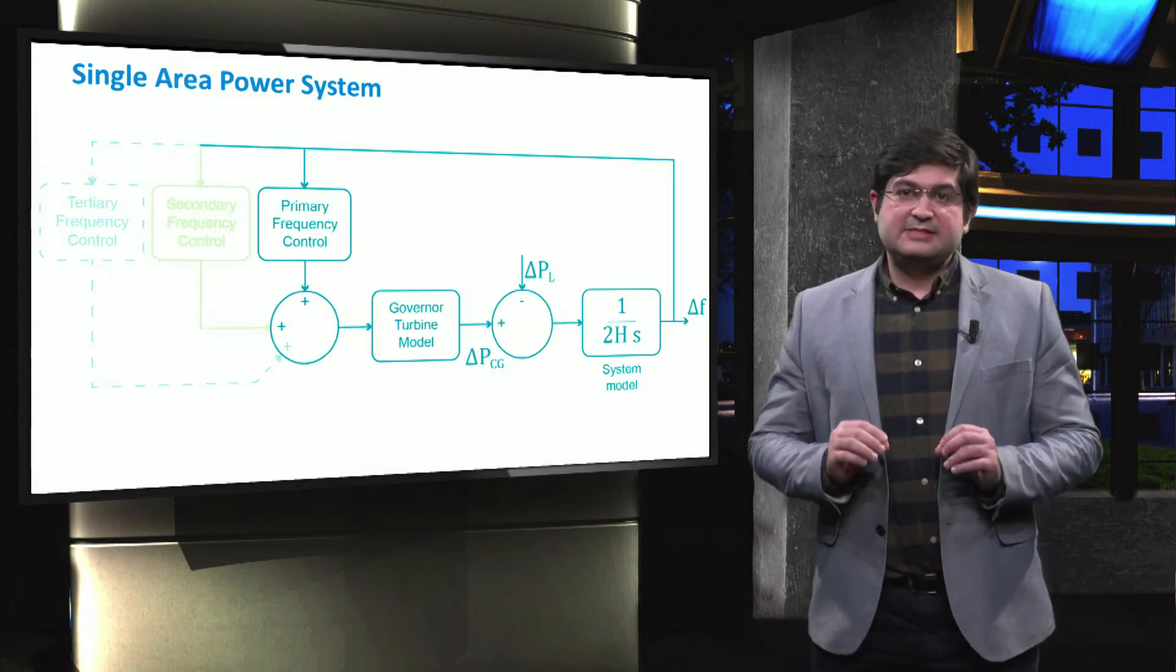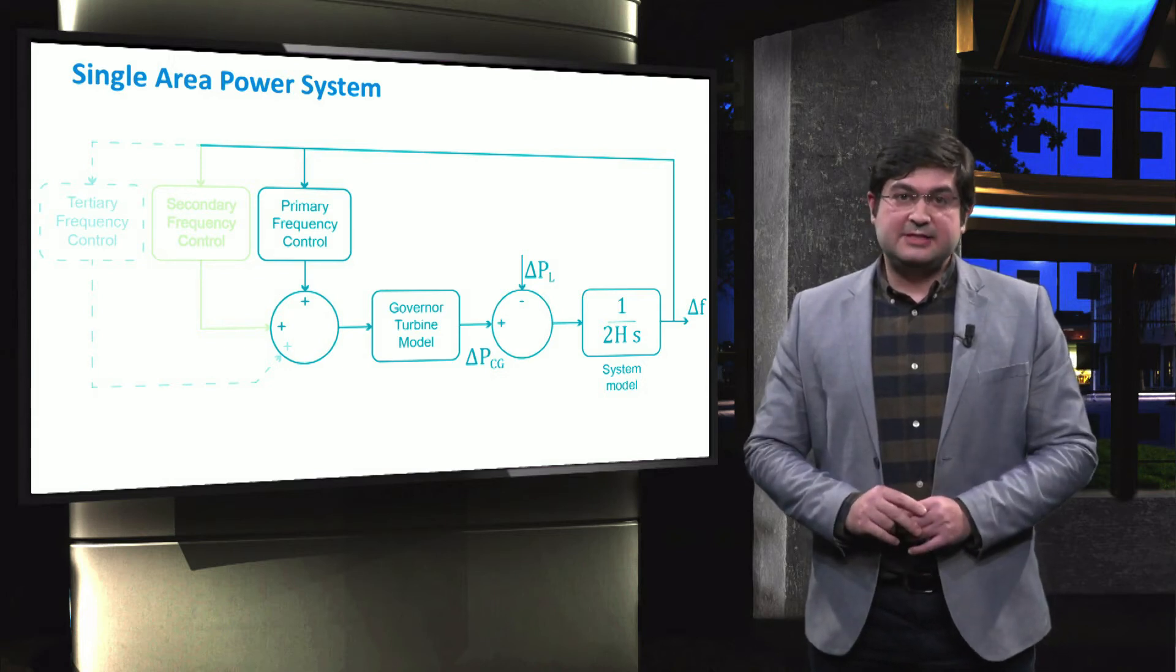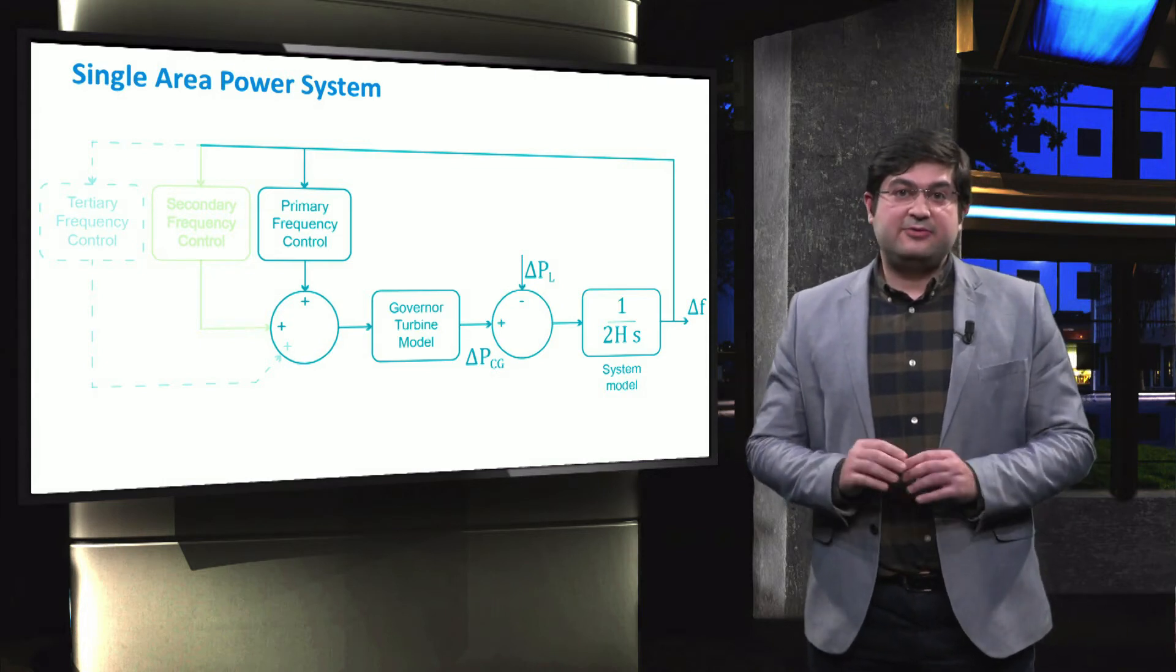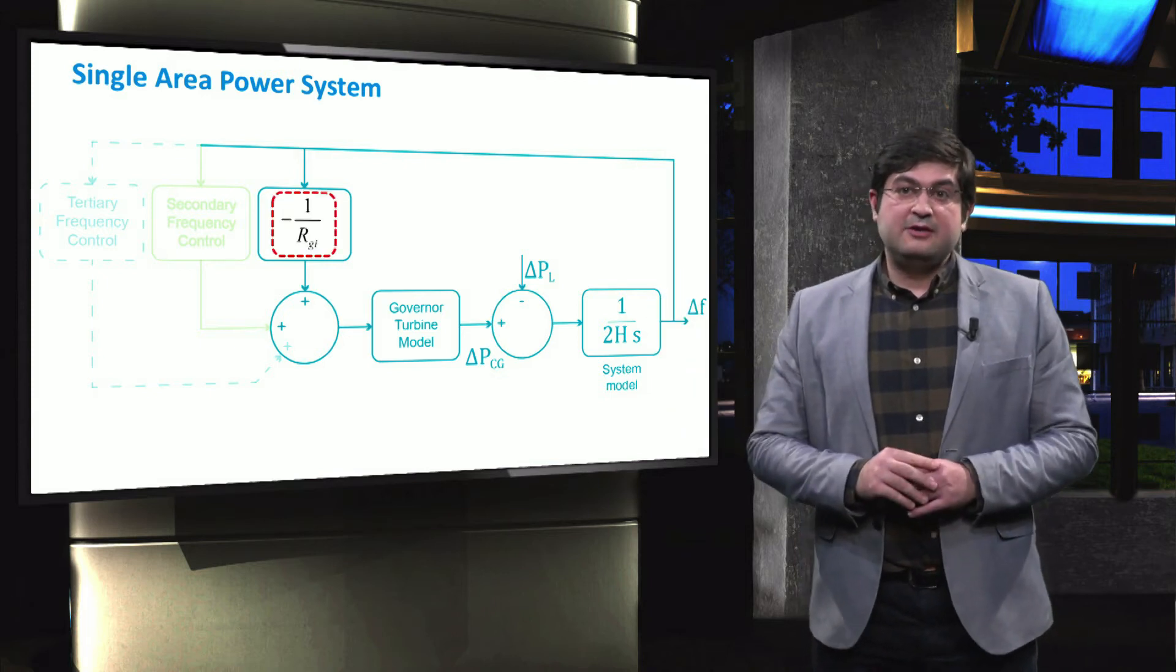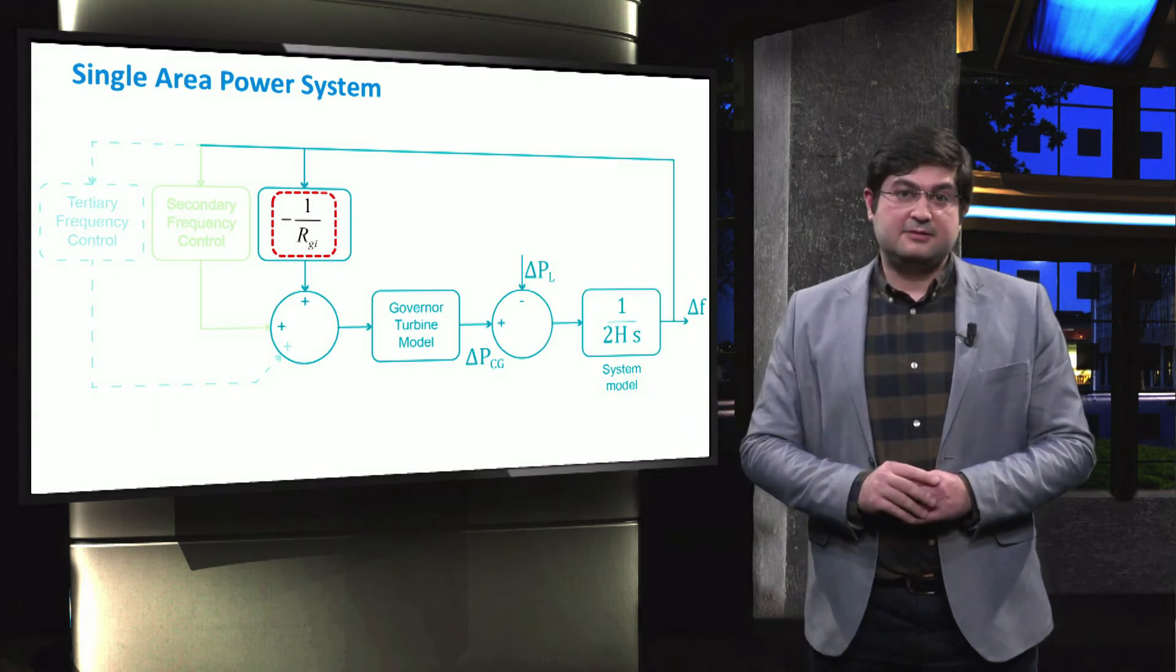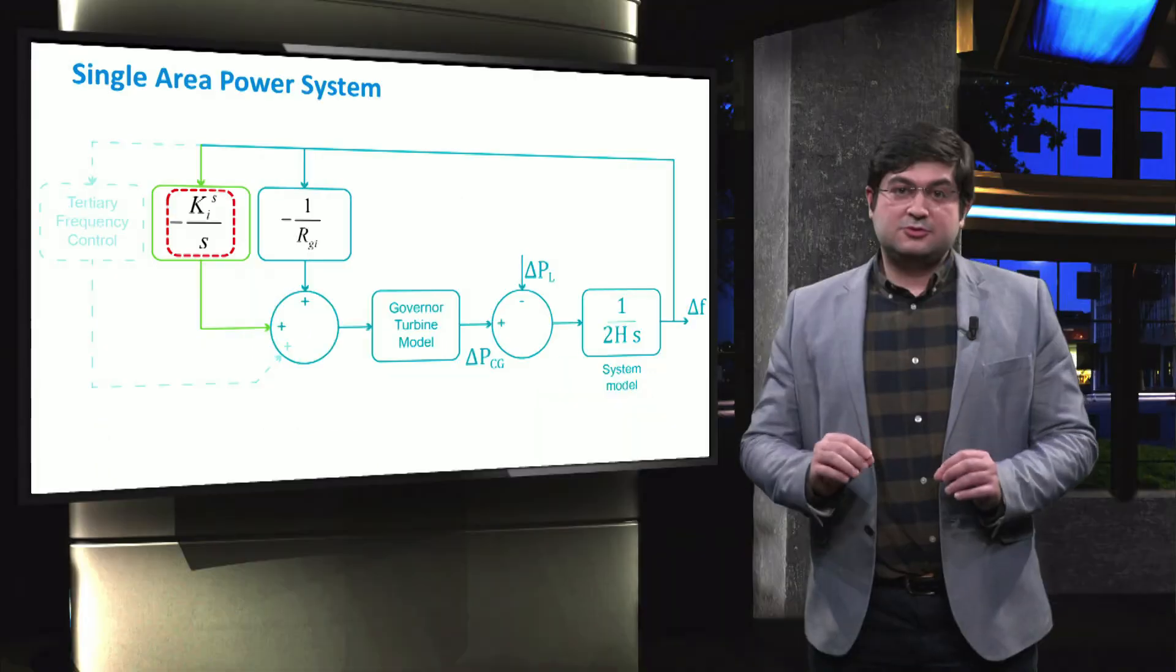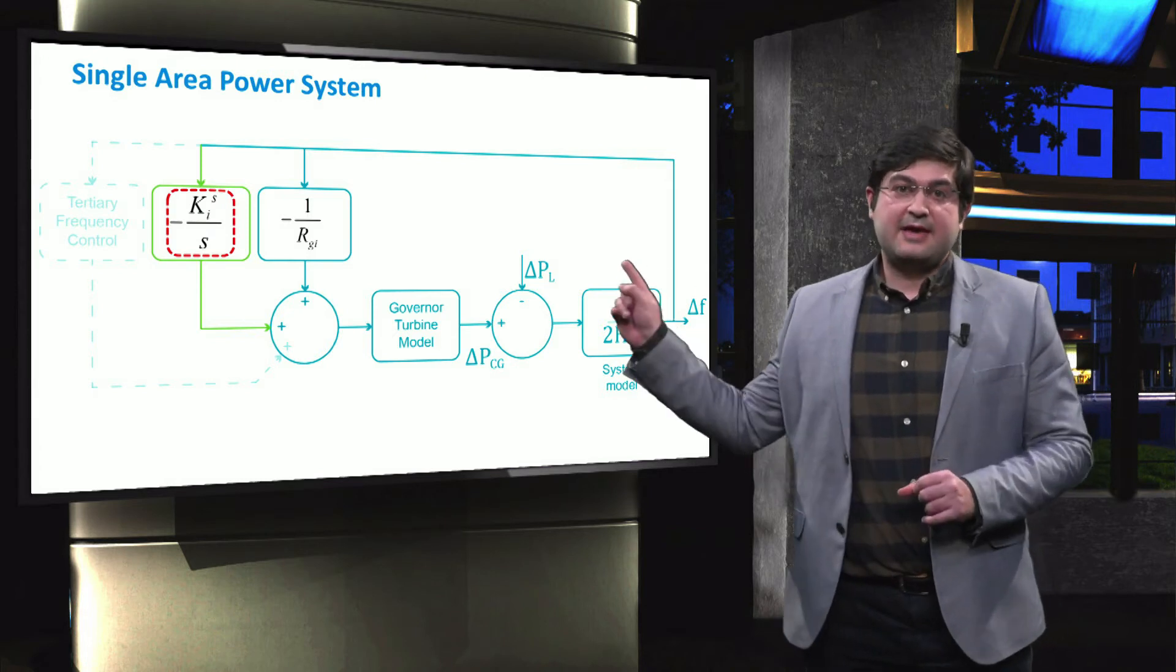In the slide, we see the generic frequency control scheme of single area power system, where the mismatch between the generation and the demand is reflected as the frequency deviation delta-f. To implement the primary control, we mentioned that the inverse of the droop control, Rgi, is multiplied. Now we show how the secondary control can be implemented in one generating unit to remove the steady state error of the frequency. To do so, it is required to apply an integral controller with a coefficient Ki.